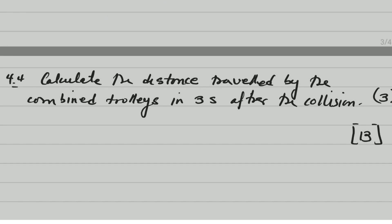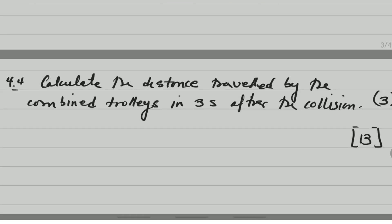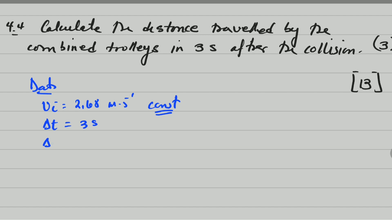The next question says: calculate the distance travelled by the combined trolley in three seconds after the collision. When the two trolleys collide they stick together and continue moving with a constant velocity — that is very important. So data: initial velocity equals 2.68 m/s (constant), time equals 3 seconds, and we are looking for displacement.